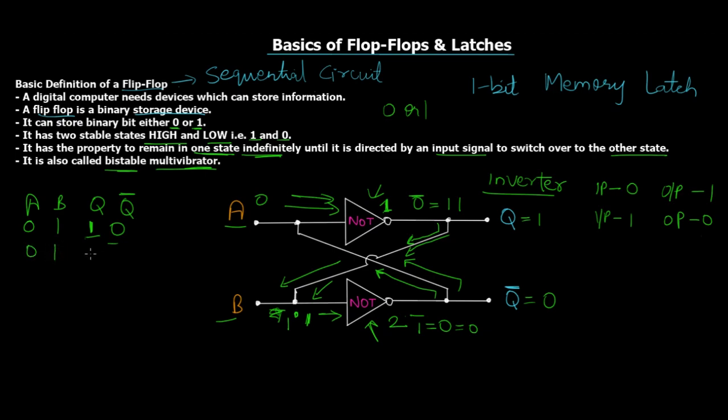This process continues indefinitely, which means that we are always going to get output as 1 and 0. Always input is going to be 0, 1 and the output is going to be 1, 0. So this will happen until unless we have powered on the circuit. This means that the output is maintaining states.